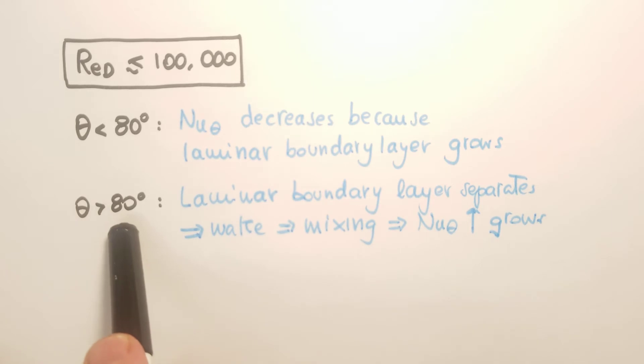Whereas when theta is larger than about 80 degrees, the laminar boundary layer separates because the particles in the boundary layer cannot sustain the adverse pressure gradient.